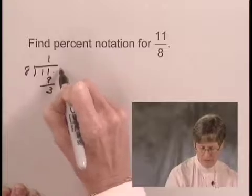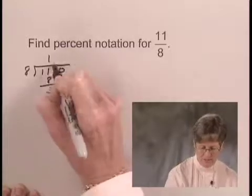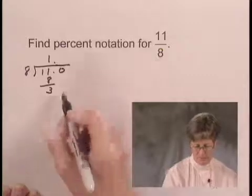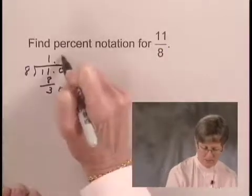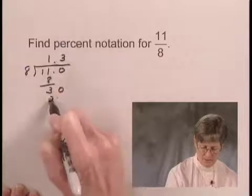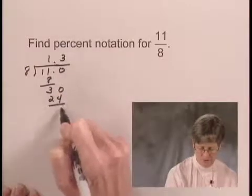Now we'll need to write a decimal point and add a 0. And we'll place the decimal point in the quotient, bring down the 0. 8 goes into 30 3 times. 3 times 8 is 24. The difference is 6.